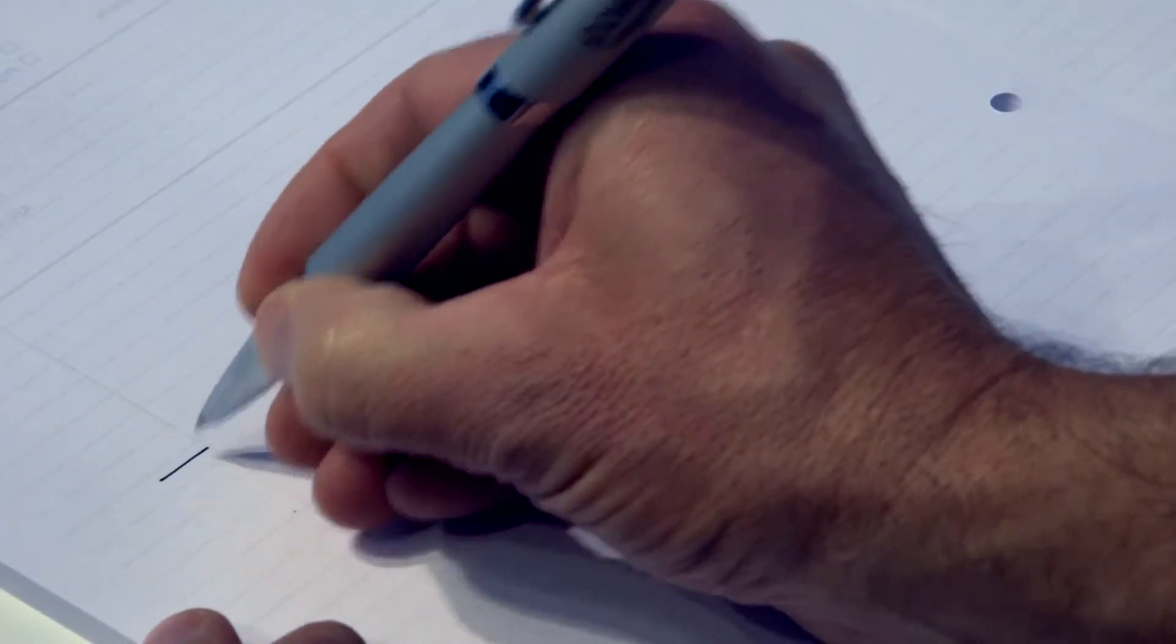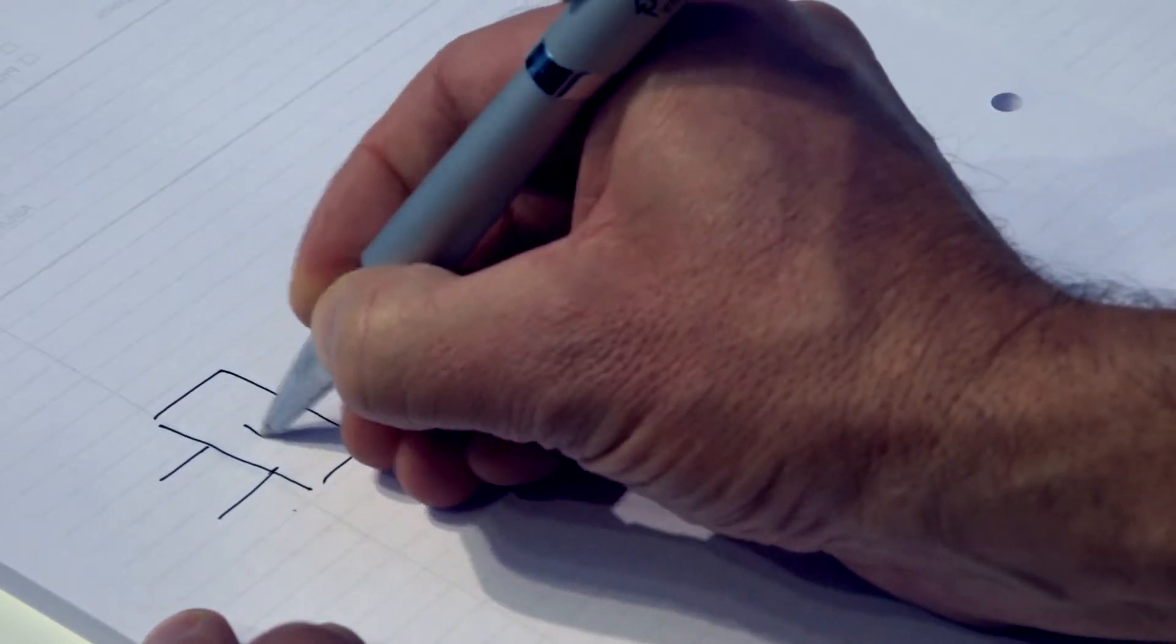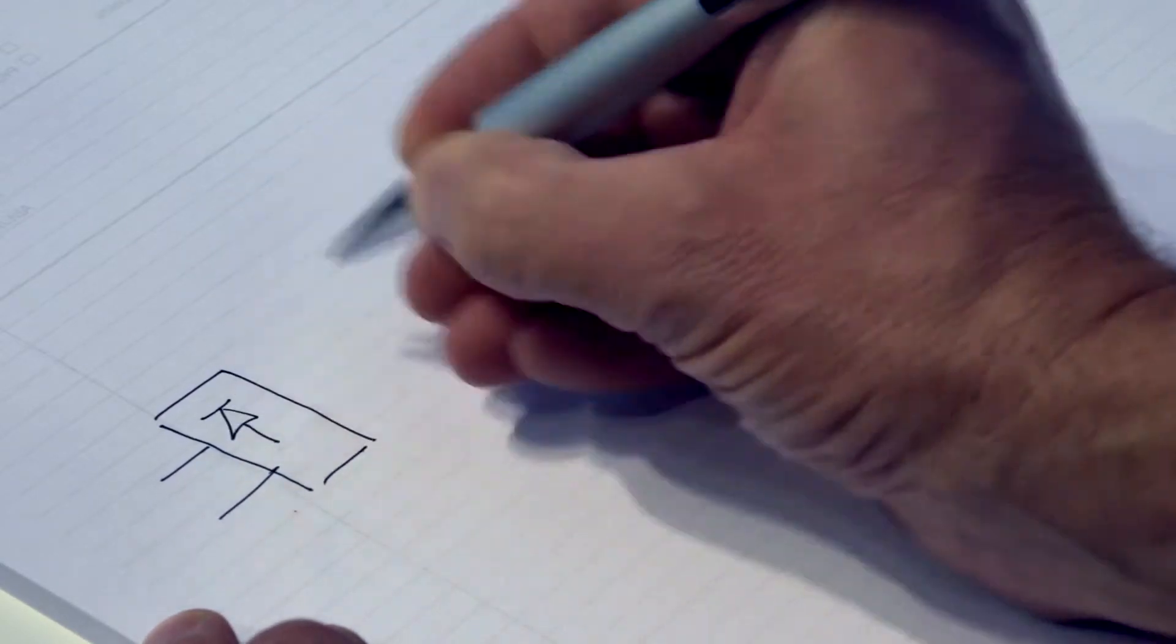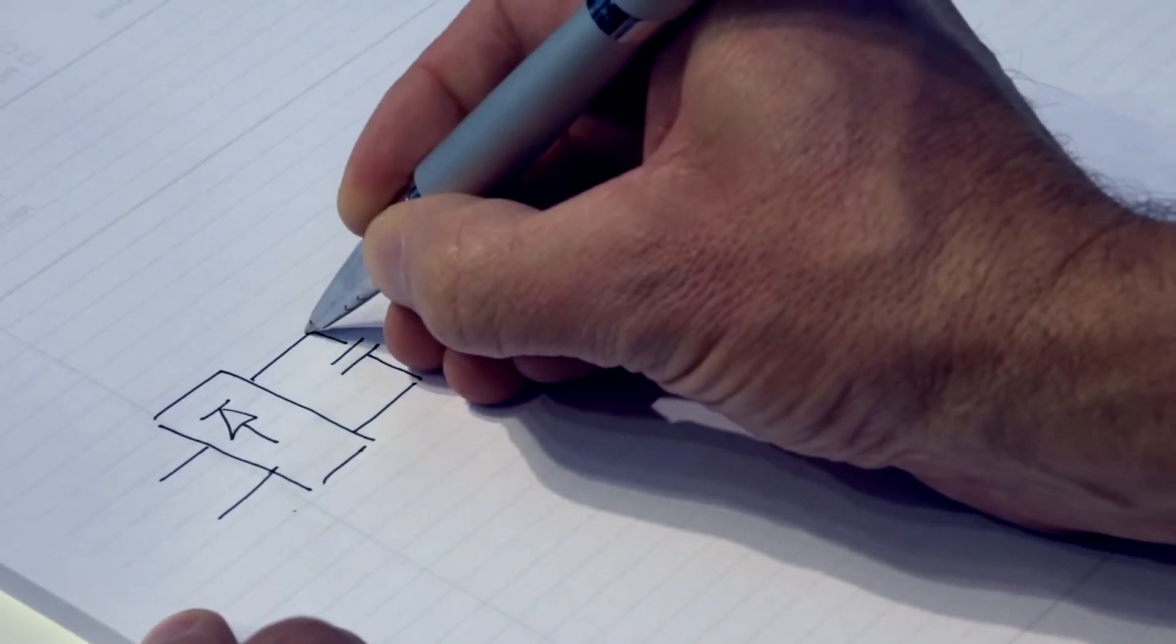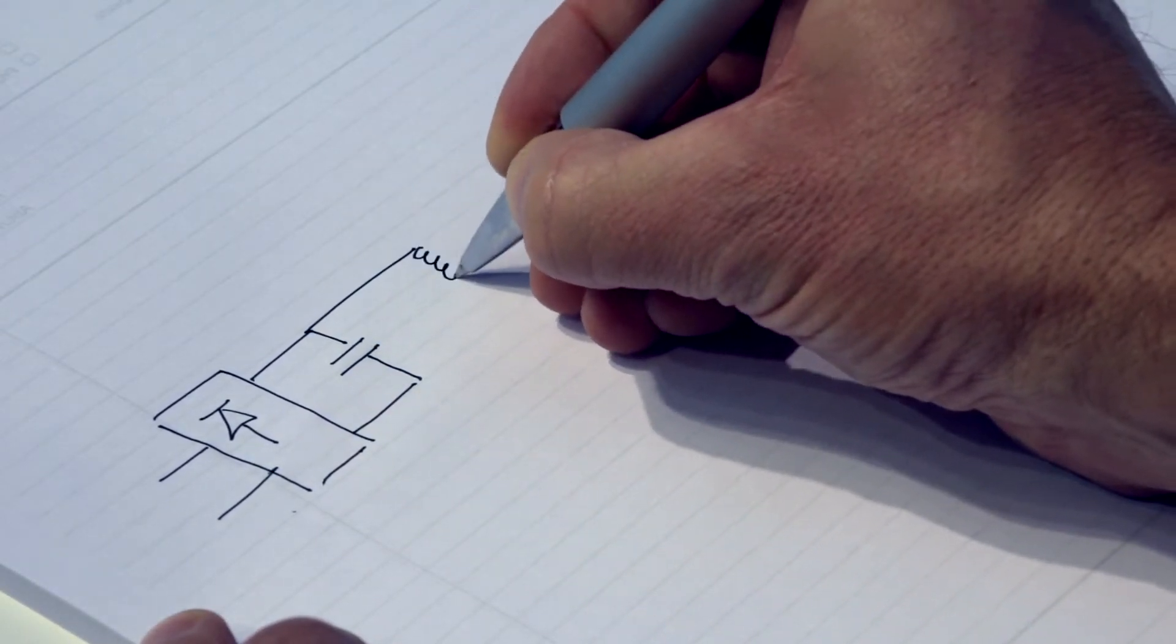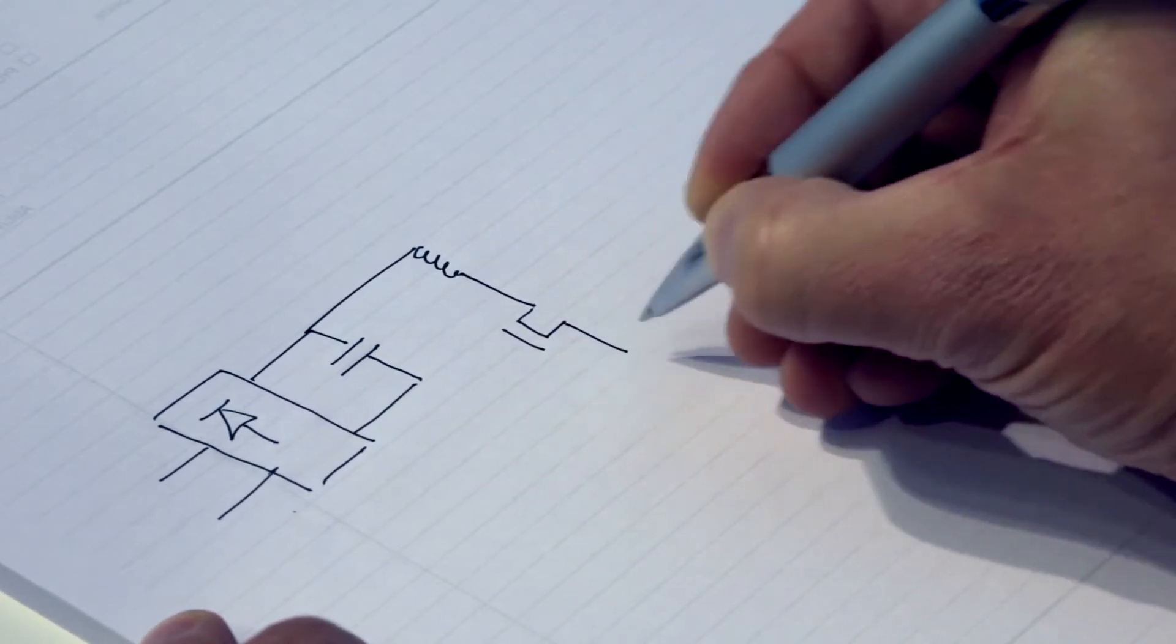The new inner switch product takes the best side of primary side control and the best of secondary side control and merges them together. So here's the same input circuit that we had before. Here's the same simple transformer mechanism that we had before.